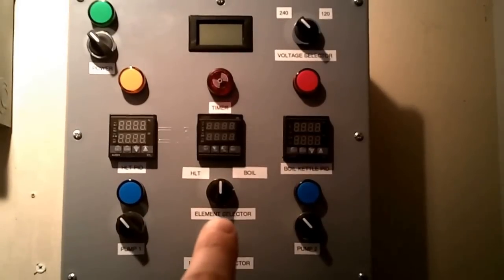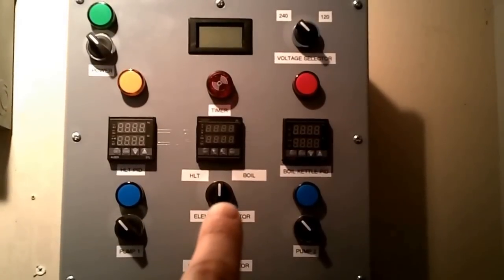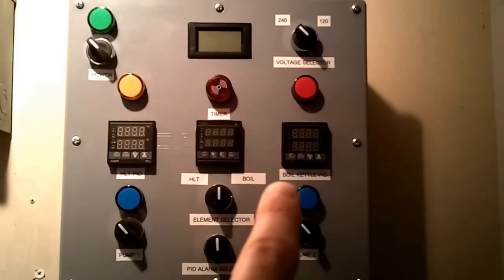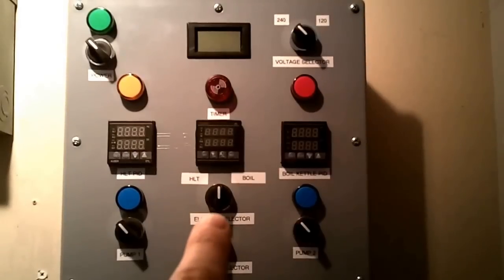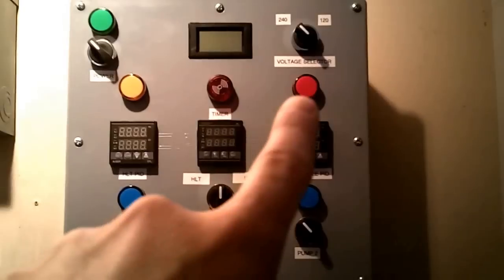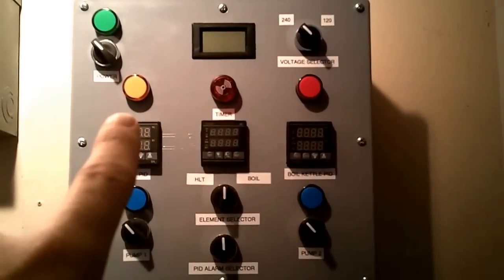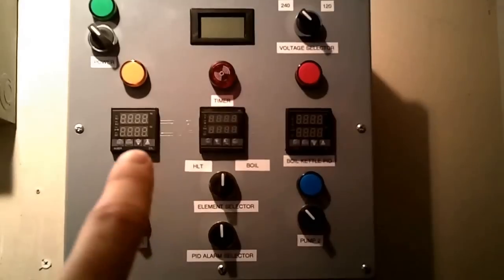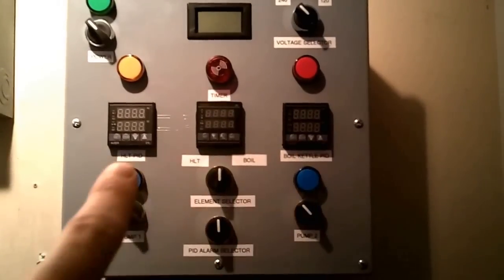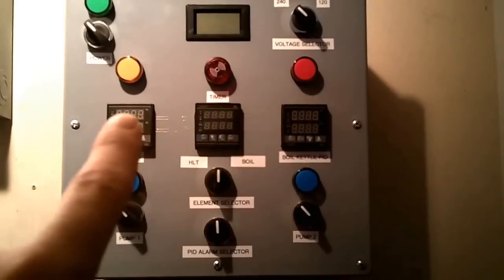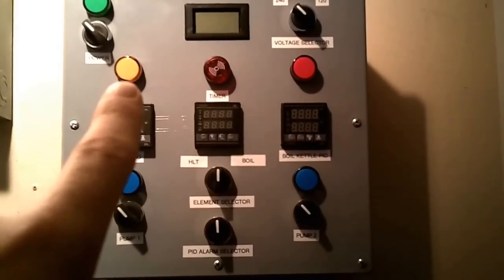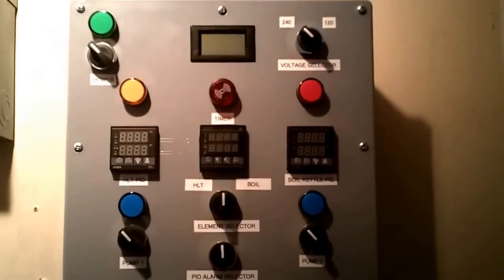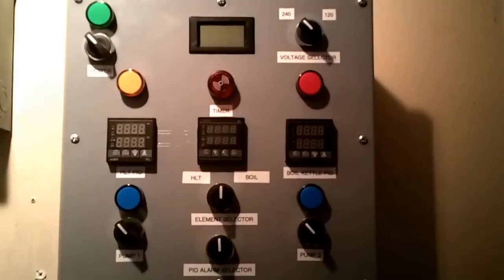Directly above it I have a PID selector switch and that guy there, if it's flipped this direction, this is my HLT PID and to the right that is my boil kettle PID. And then these lights above will tell me if that PID is actually the one that's selected and running because you'll see in a moment here when I flip on the panel both these PIDs are going to light up. So that just gives me a good visual to let me know that there is a potential current being sent to those 5500 watt elements.